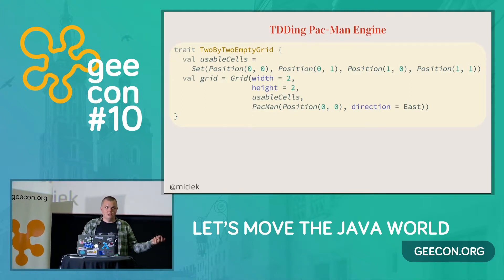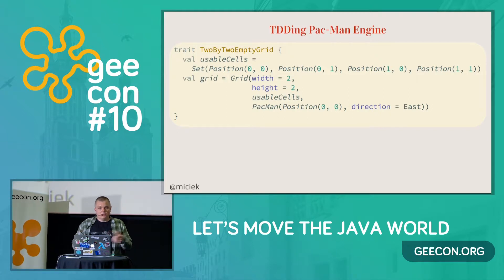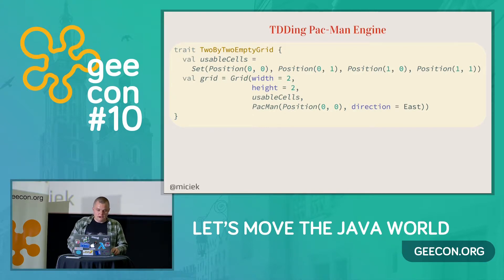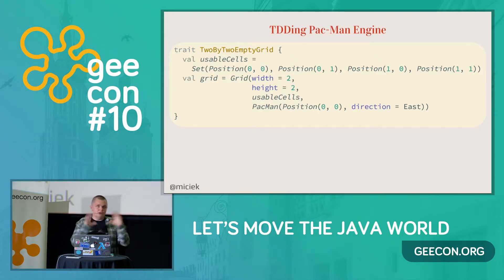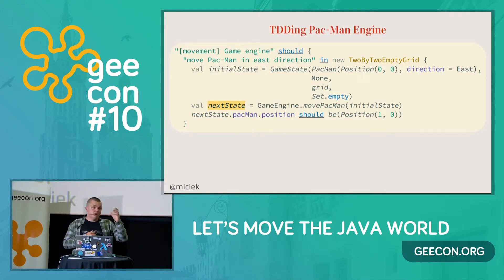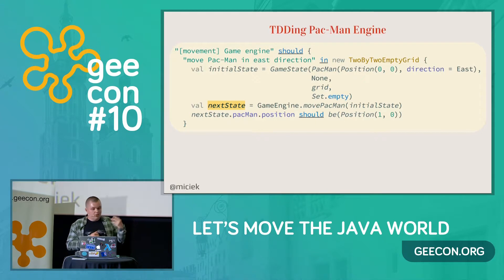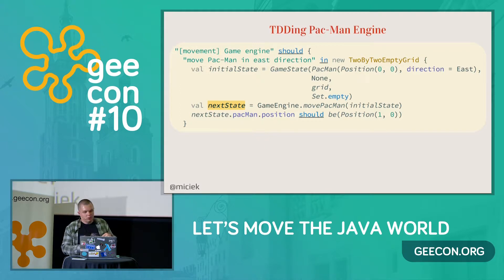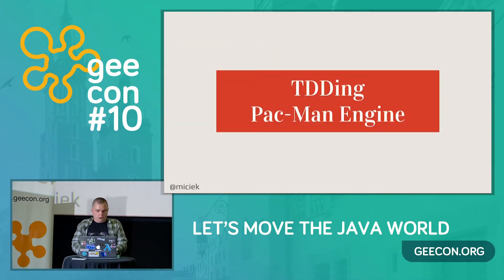In Scala with ScalaTest we have something we can use in our tests: a context trait, so we don't need beforeEach or beforeAll. We can have all the context in this kind of trait which is instantiated every time the test runs. We'll be passing the context of the grid — what positions are there, width, height — and naming them like 'two by two empty grid,' meaning there are no walls so Pac-Man should just go around. Each test will have three lines of code: initial state, triggering the functionality, and asserting on what the next position should be.